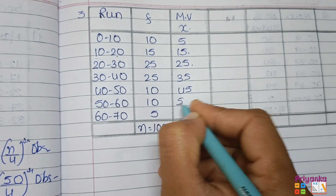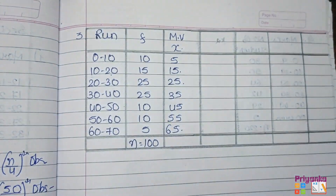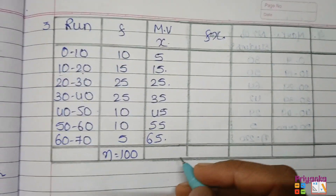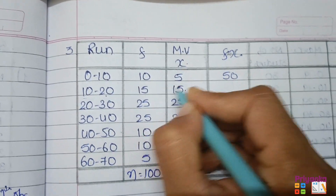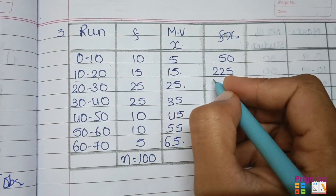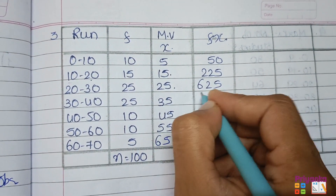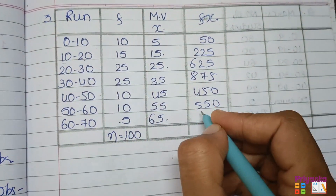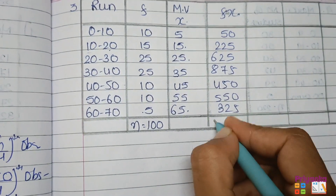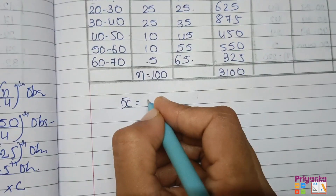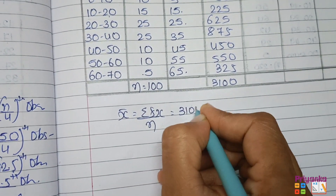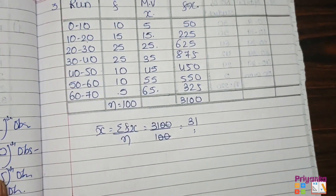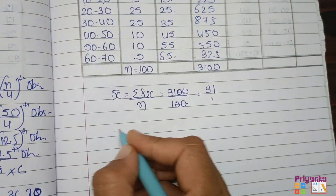After finding the mid values, the next step is the fx column — multiply mid value by frequency to find the mean. 10 fives are 50, 15 into 15 = 225, 25 into 25 = 625, 25 into 35 = 875, and so on. Get the total of this fx column — you get 3100. Mean = 3100 divided by n (100) = 31.